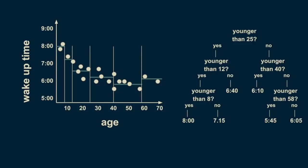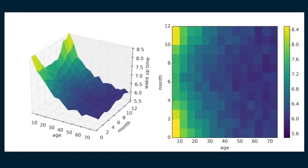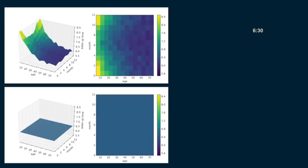We can also extend this regression tree example to have two predictor variables. If we consider not only someone's age, but the month of the year as well, then we can find even richer patterns. In North America, days are longer in summer months and it gets lighter earlier in the morning. In this completely unrealistic example, children and teens have their wake-up time driven by when the sun comes up. On the other hand, adults fall into more regular patterns, fluctuating only slightly with the seasons. We construct this decision tree much the same as the last one. We start with the root — a single estimate that roughly fits the entire dataset — 6:30.